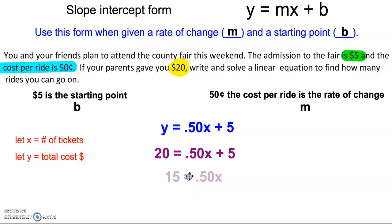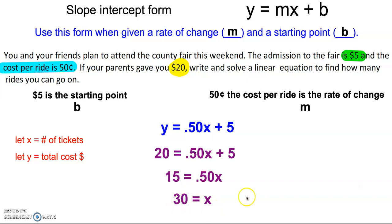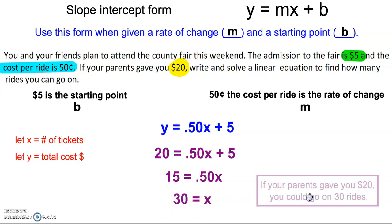So subtract 5 and divide by 50 cents, and we get an x value of 30. So what does that x value mean here? The x value represents the number of rides you can go on. So if your parents gave you $20, you could go on 30 rides.